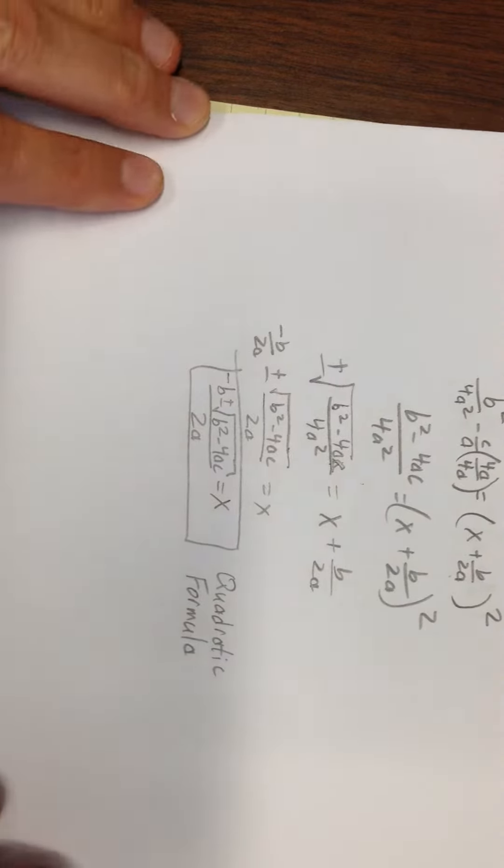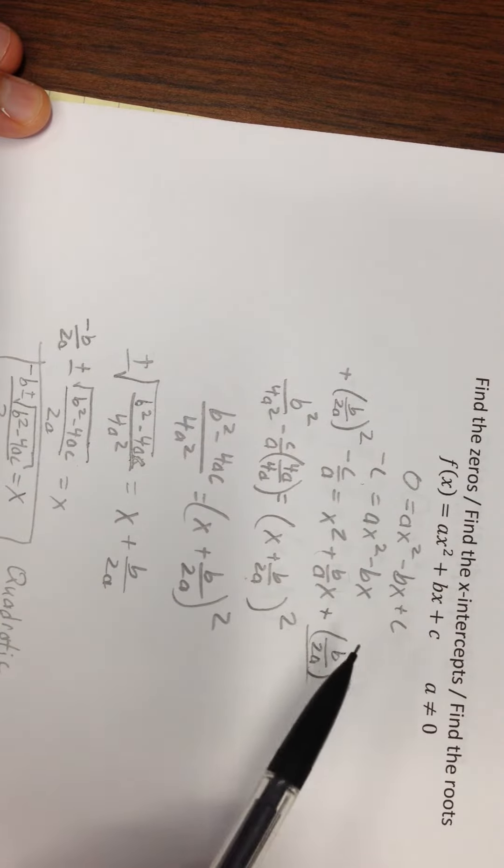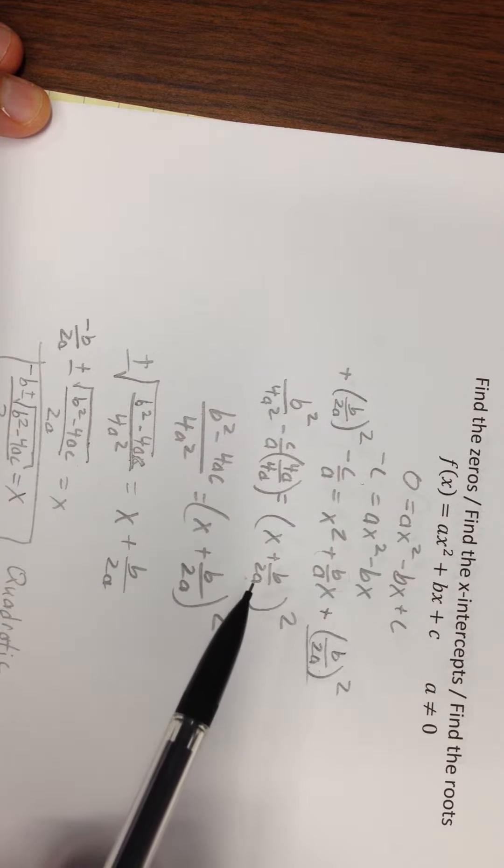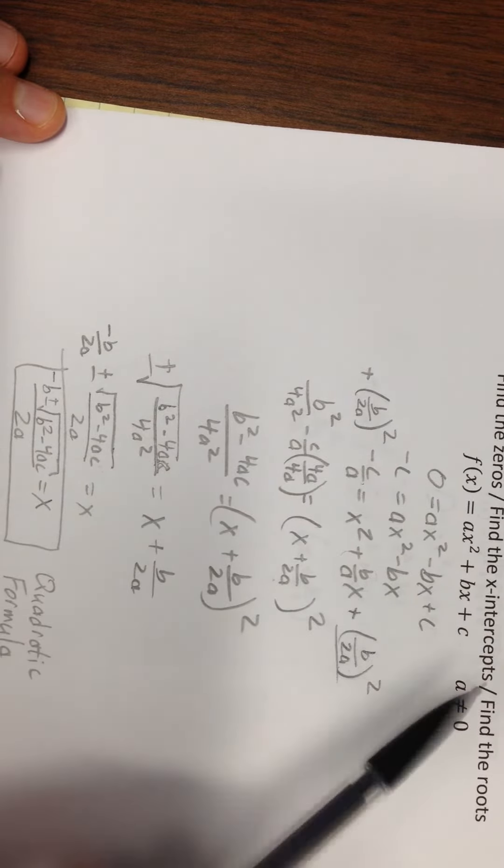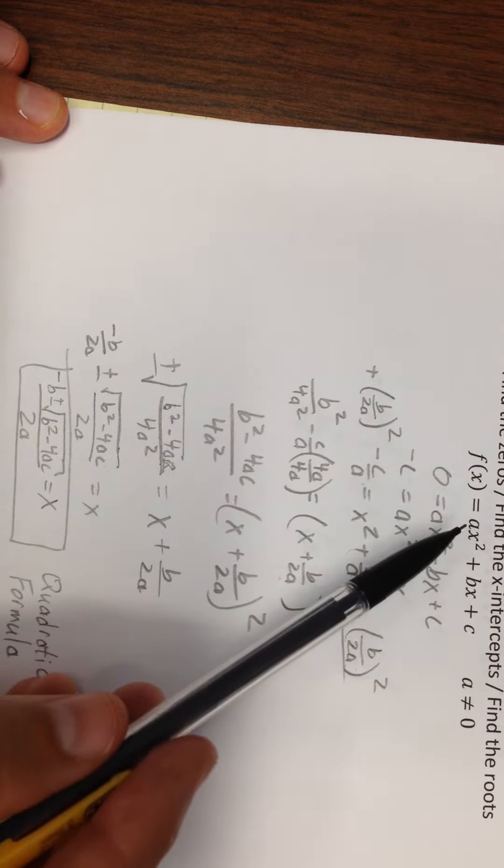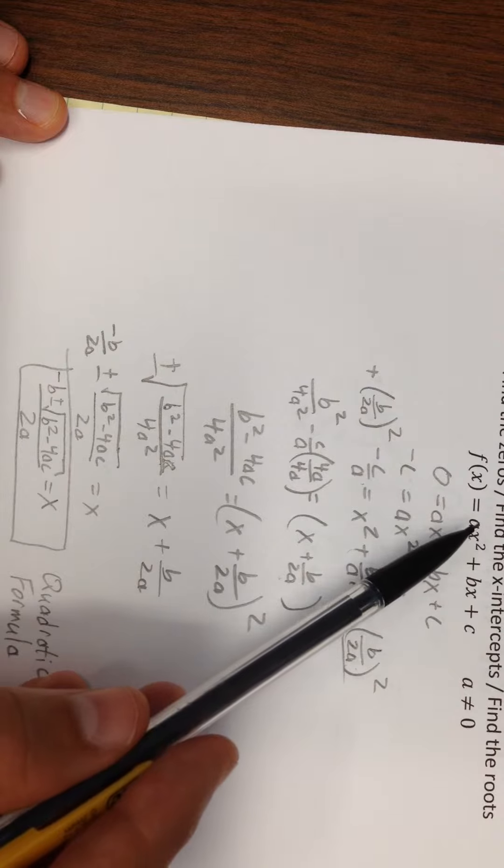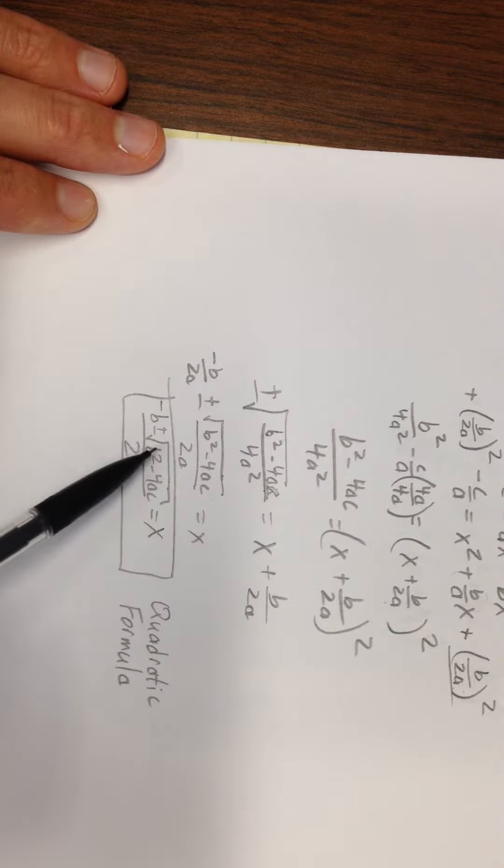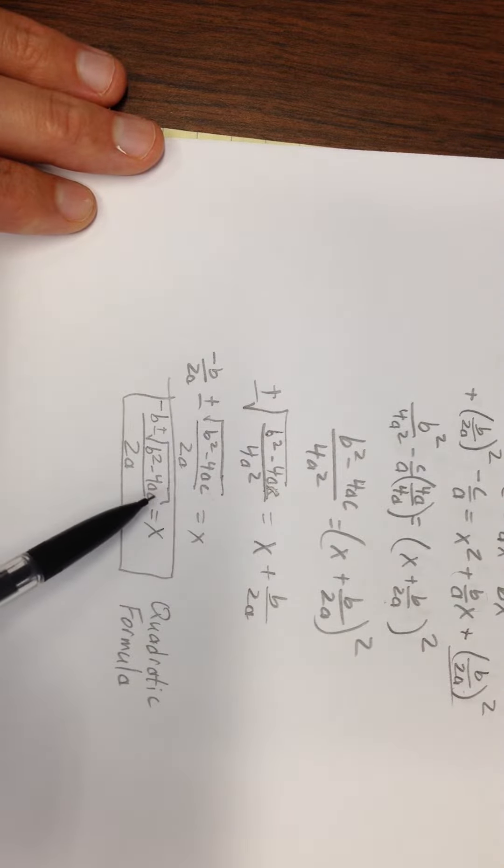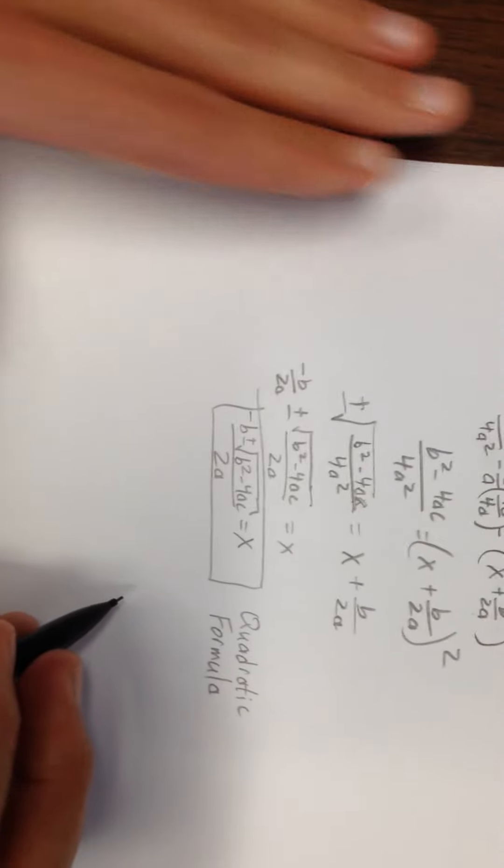And the nice thing about it is you don't have to do this completing the square process all the time. It's achieved by completing the square process, but now that we know it once and for all, if I get something that has 3x² + 4x + 5, I can put 3, 4, and 5 in for a, b, and c and use the quadratic formula. It always gives me a solution.